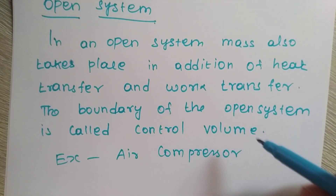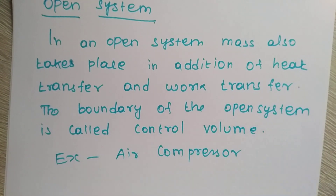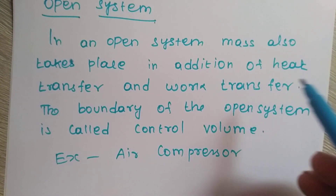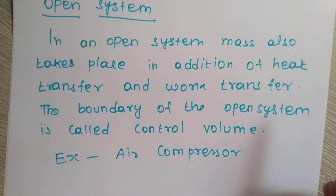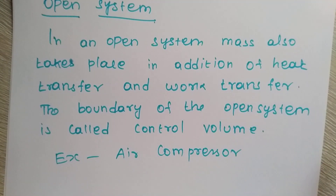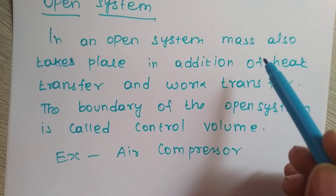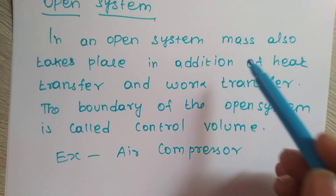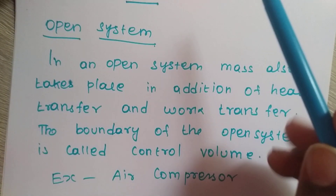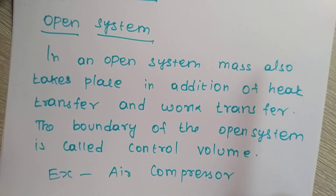In an air compressor, there is a piston that reciprocates or moves. The piston compresses the air, and air goes out. If you look at the compressor, work is transferred, heat is transferred, and mass is also transferred — air enters and exits the compressor.